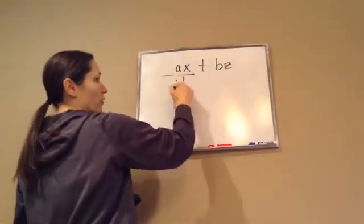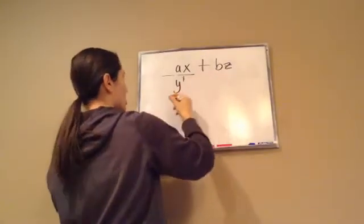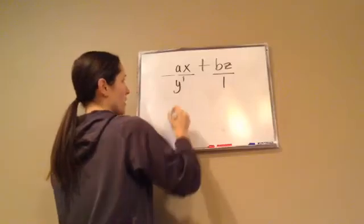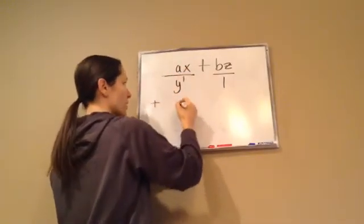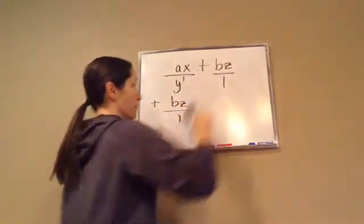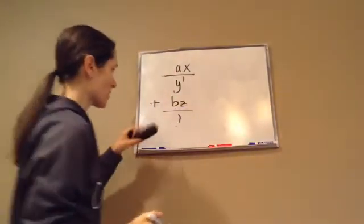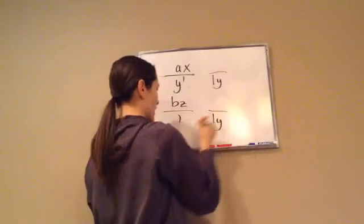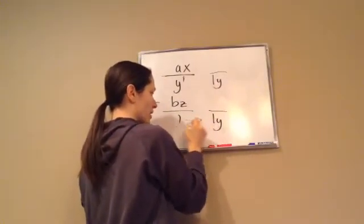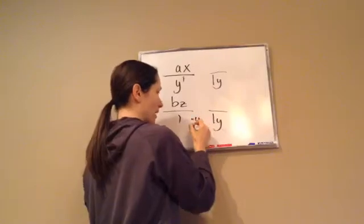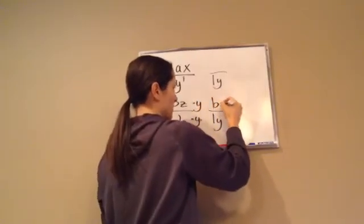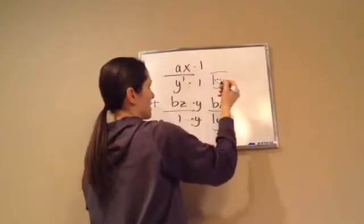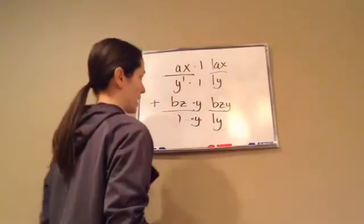So what we're going to do is we've got ax over y to the 1 plus bz. So I'm going to write this down vertically, and I'm just going to put it over 1. Remember that rule? So ax over y to the 1 plus bz over 1. And now I'll come up with a common denominator, which is going to be y. So then what did I do from here to here? From 1 to get to y, I times it by y. So I'm going to time this by y. So this is going to be bzy. And what did I do from here to here? I times it by 1. So I'm going to times that one by 1, which is going to be just ax.